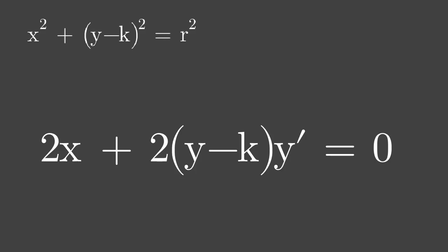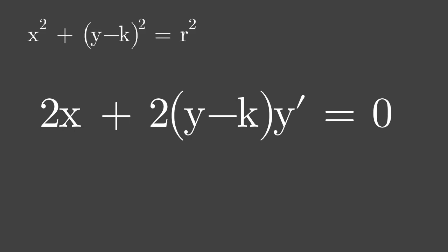Upon dividing, the new equation is x plus the quantity of y minus k times y prime equals 0.